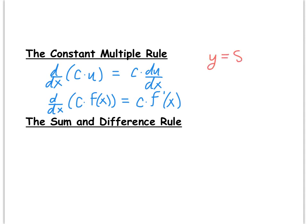For example, to take the derivative of 8x squared, c equals 8 and f of x equals x squared. We know the derivative of x squared drops the 2 in front and loses a power of x. The constant 8 absorbs the 2 that drops down: 8 times 2 equals 16, giving us 16x. Don't overthink this — constants just float along for the ride when taking derivatives.